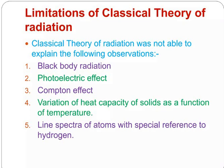Limitations of classical theory of radiation. Classical theory of radiation was not able to explain the following observations: black body radiation, photoelectric effect, Compton effect, variation of heat capacity of solids as a function of temperature, and line spectrum of atoms with special reference to hydrogen.